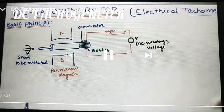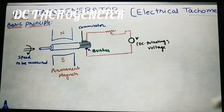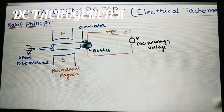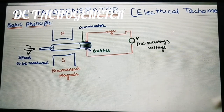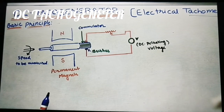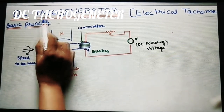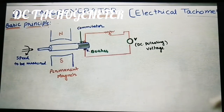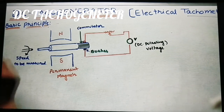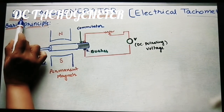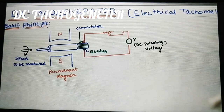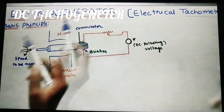Today we will discuss about the DC tacho generator. It is an electrical tachometer. A tachometer measures speed — we have already discussed mechanical tachometers. This generator measures the speed of automobile vehicles, engines, and machine parts. The output voltage is DC, and by reading this voltage we can find the speed in RPM. That is why it is called a DC tacho generator.